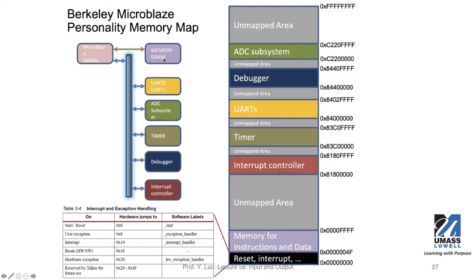Using the color coding, you can see which region is mapped for real memory where you can store and read data. If you want to operate on UART controllers and their internal control registers, you'll find them in the memory range 0x840000 to 0xFFF. Timer registers are mapped in another region, and you can find the interrupt controller in another region.